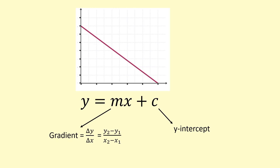To figure out the gradient, we normally use the biggest possible triangle to reduce the percentage uncertainty when calculating it.